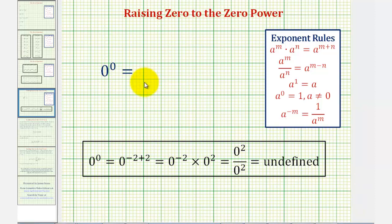Welcome to a discussion on zero raised to the power of zero. When studying algebra, we're given exponent rules, as we see here on the right, where one of them is a to the power of zero equals one. And in some textbooks, we'll also see that a, the base, can't equal zero.